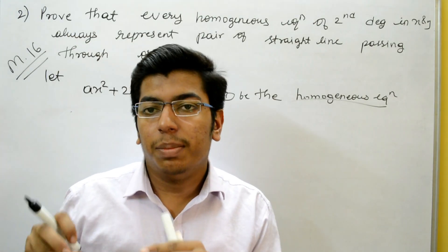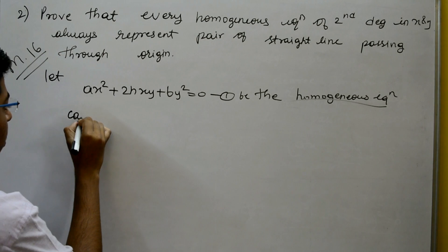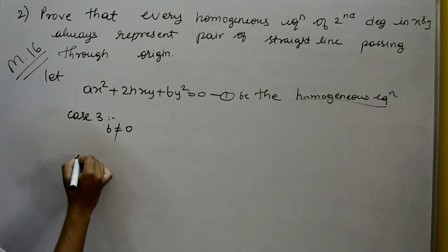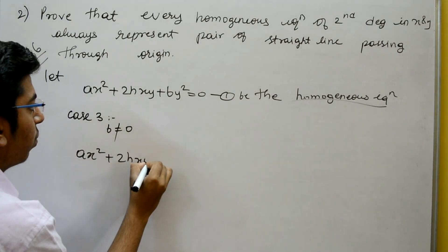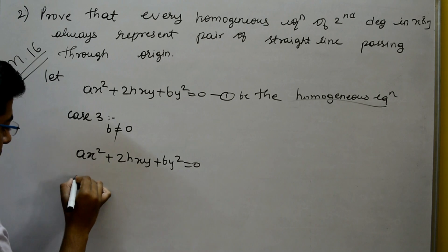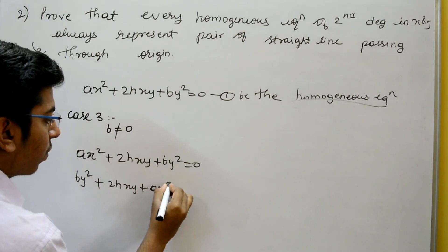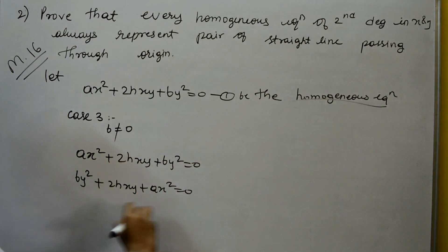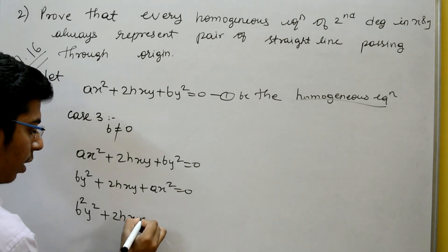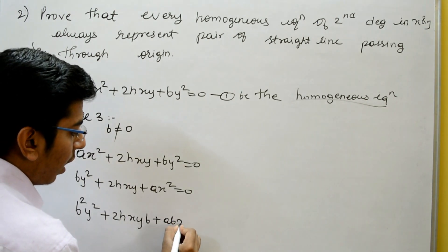Case 3: B ≠ 0. The equation is AX² + 2HXY + BY² = 0. Rearranging as BY² + 2HXY + AX² = 0, then multiplying throughout by B: B²Y² + 2HXYB + ABX² = 0.